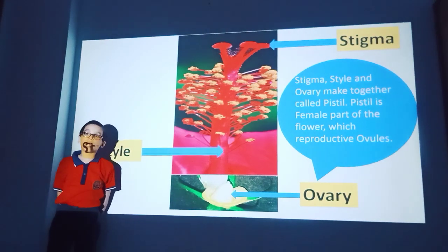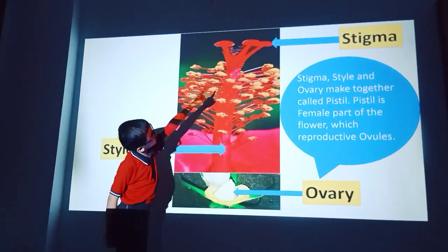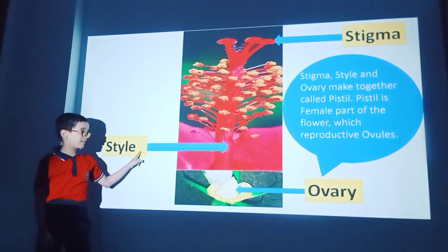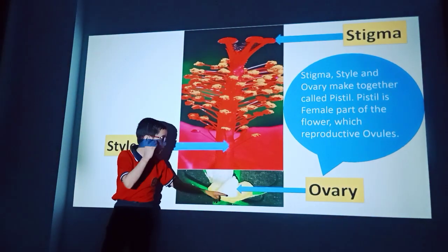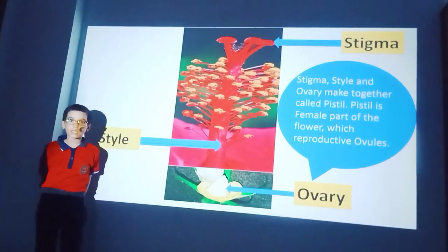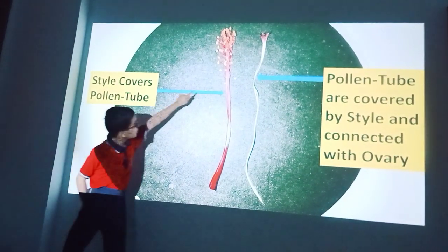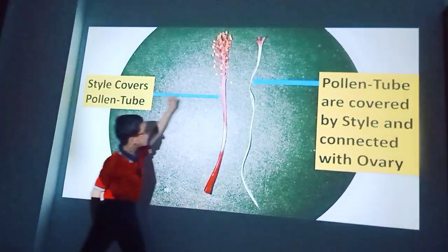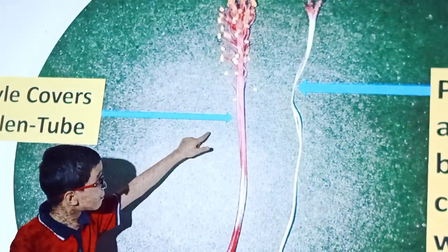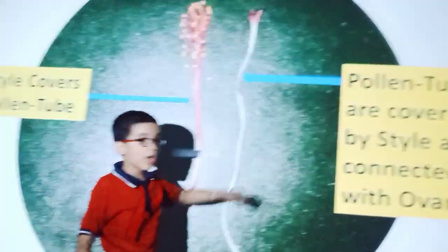Now I am going to describe about the female part. Stamen is the male part of the flower which produces ovules. Now friends, you can see this red tube is called style. And this white tube is called pollen tube. Style covers the pollen tube and is the outer part of it. Pollen tube is the inner part of the style. Pollen tube is connected with the ovary and stigma.